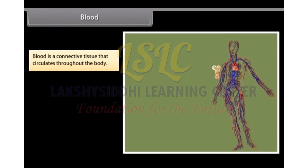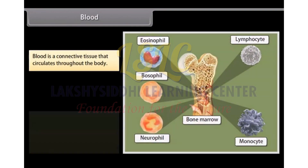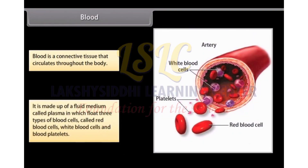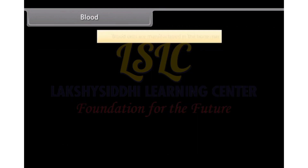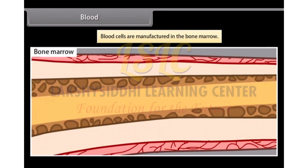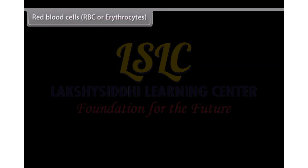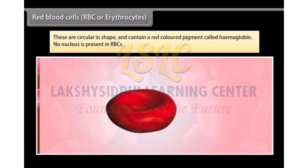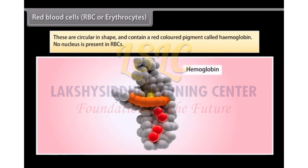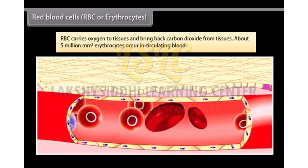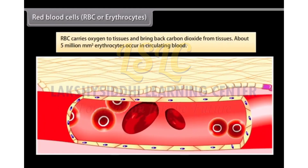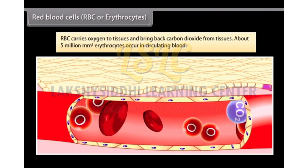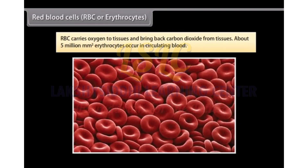Blood is a connective tissue that circulates throughout the body. It is made up of a fluid medium called plasma in which flow three types of blood cells: red blood cells, white blood cells and blood platelets. Blood cells are manufactured in the bone marrow. Red blood cells, RBC or erythrocytes, are circular in shape and contain a red colored pigment called hemoglobin. No nucleus is present in RBCs. RBCs carry oxygen to tissues and bring back carbon dioxide from tissues. About 5 million per mm cube erythrocytes occur in circulating blood.